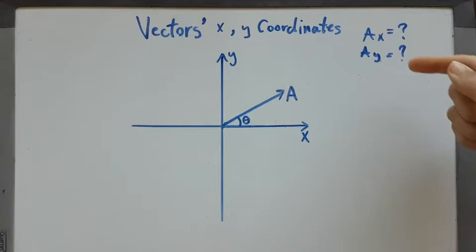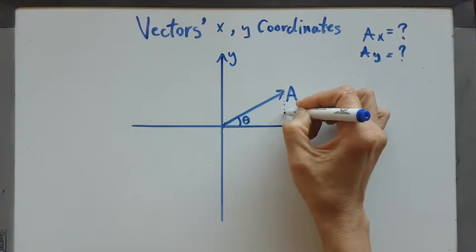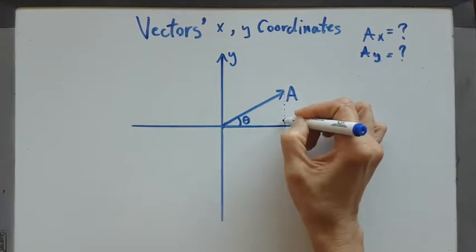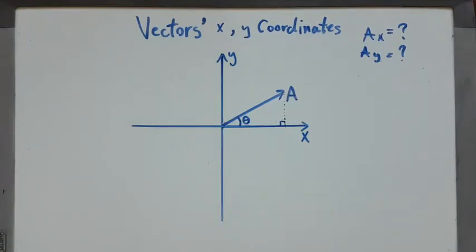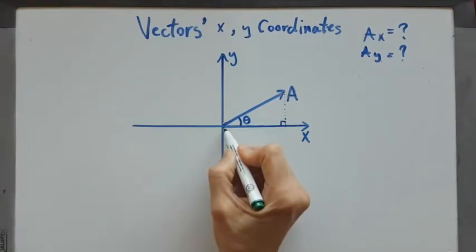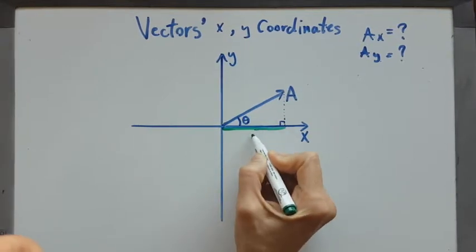If I want to find ax and ay, to find the ax I draw a perpendicular from here to the x-axis. This is the ax.